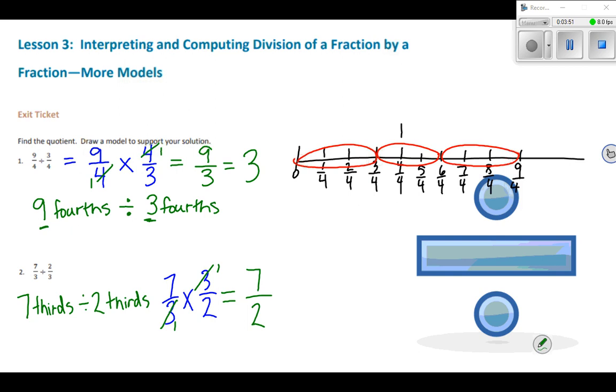Looking again, 7 thirds divided by 2 thirds. Well, 7 halves, I can get 3 sets of 2 in 7. 3 times 2 is 6. That leaves 1 left over out of 2, so 3 and 1 half.